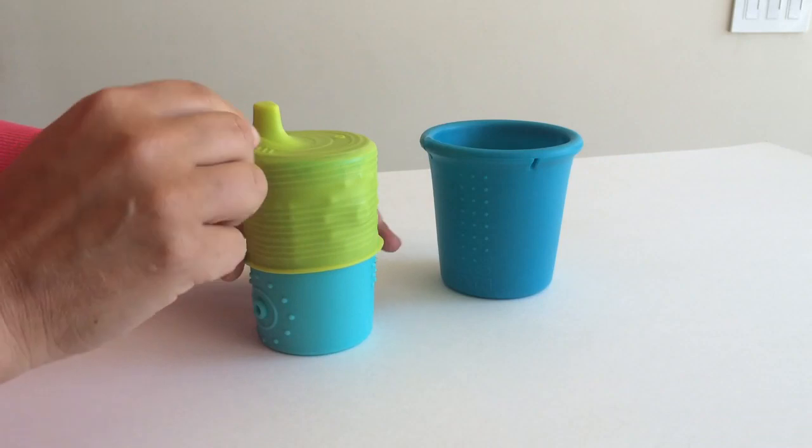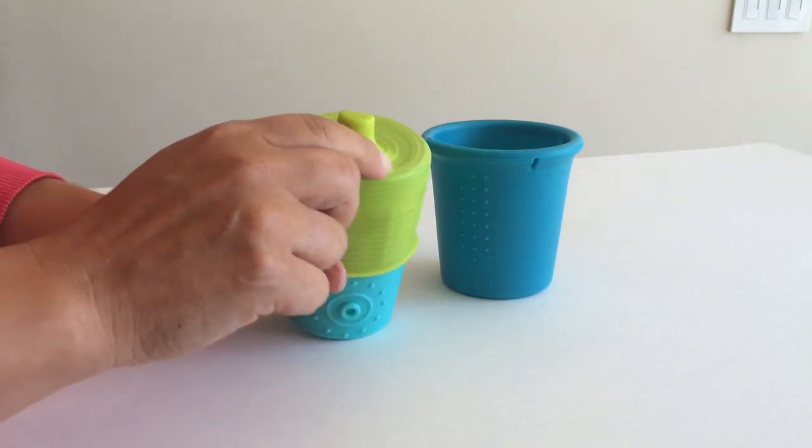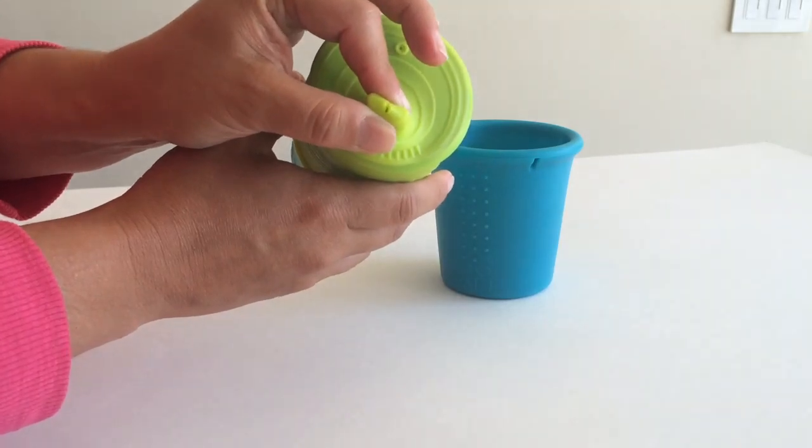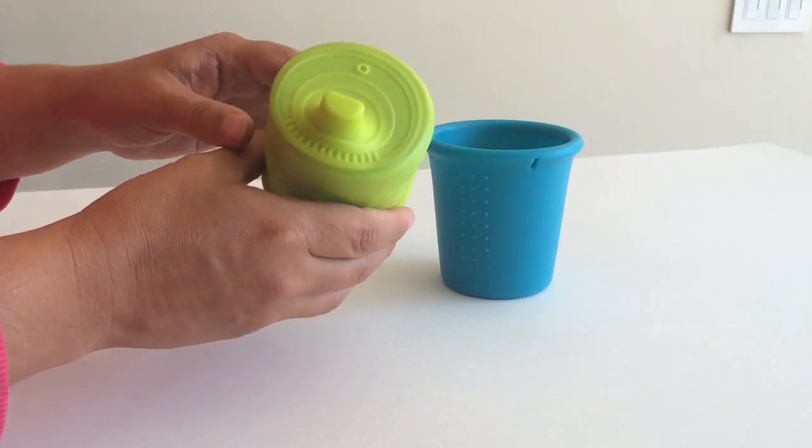You know, that side that's facing you, those ridges right there, same thing. Give it to your little one. They start chomping down, and that little opening releases liquids.